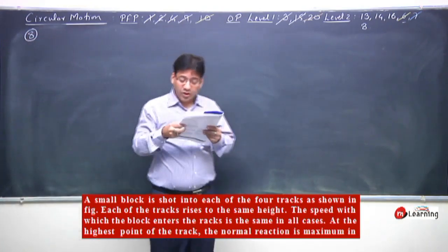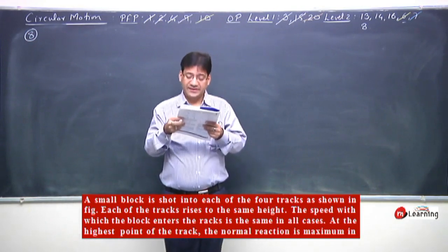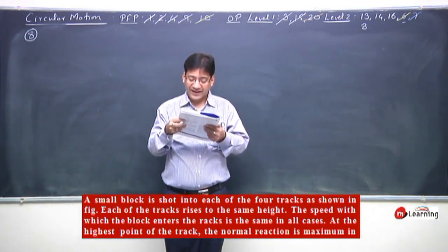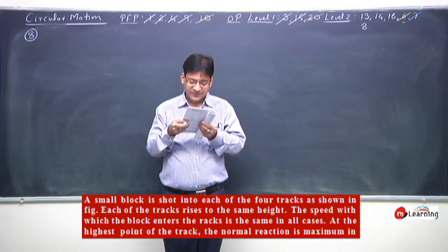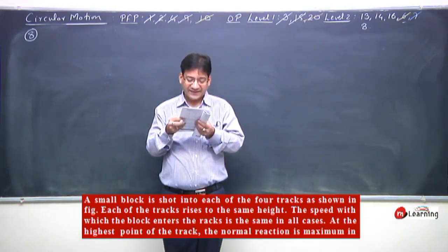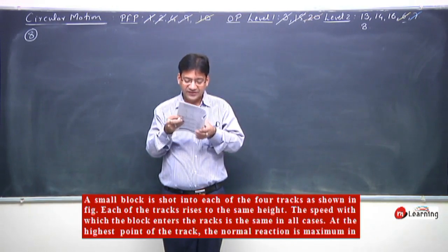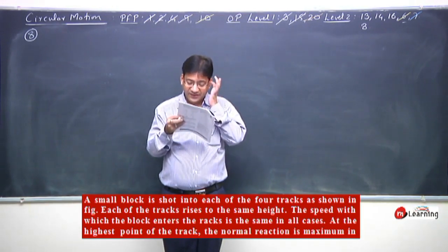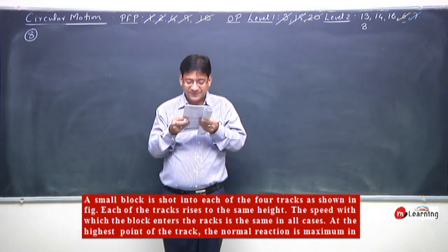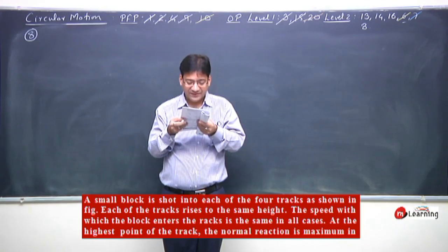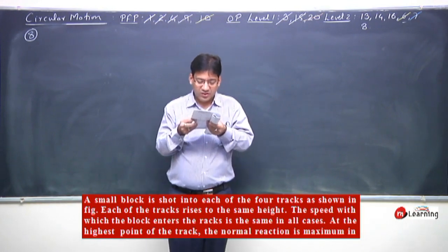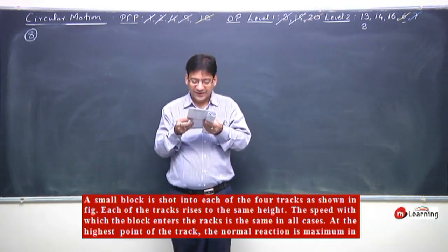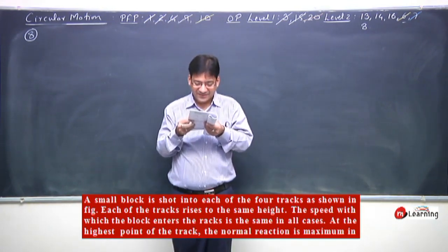Next problem: a small block is shot into each of the four tracks as shown in the figure. Each track rises to the same height with the speed v with which the block enters the track being the same in all cases. At the highest point of the track, the normal reaction is maximum in which case?